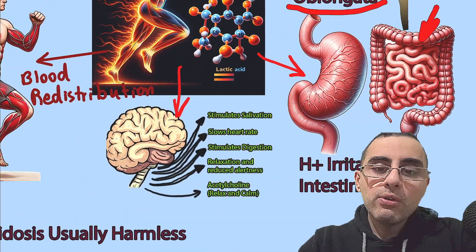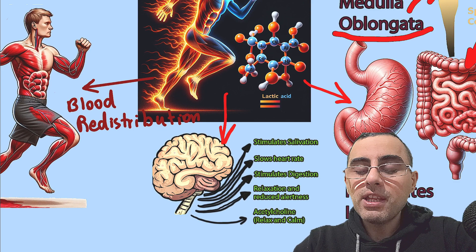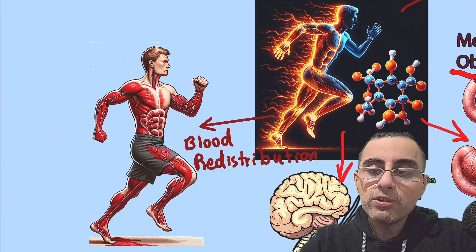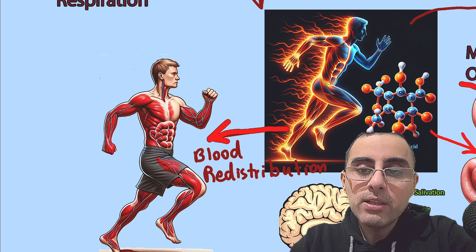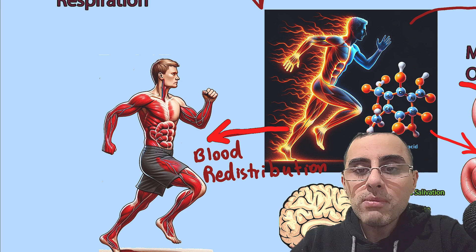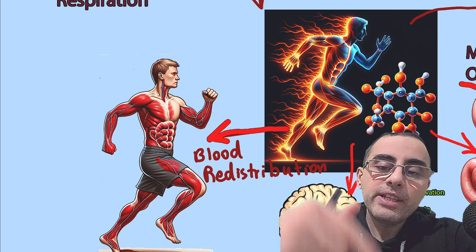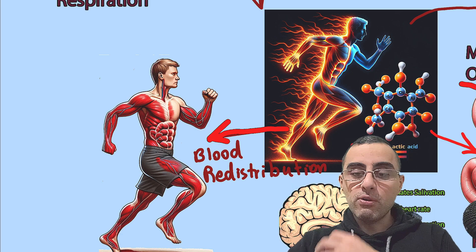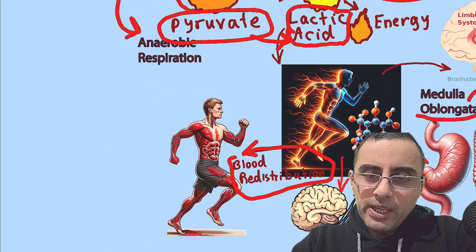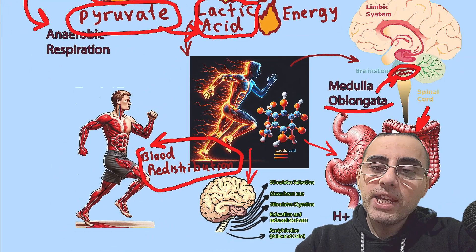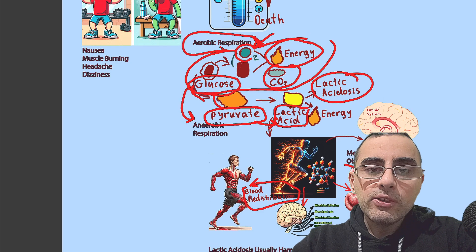Additionally, hydrogen ions accumulate in the blood and irritate the intestines, causing nausea. Lactic acid also stimulates the vagus nerve, which in turn stimulates the intestines, producing more nausea. Another cause is the redistribution of blood during intense exercise — blood moves from the intestines to the muscles, so the intestines receive less blood, which also causes nausea and dizziness.